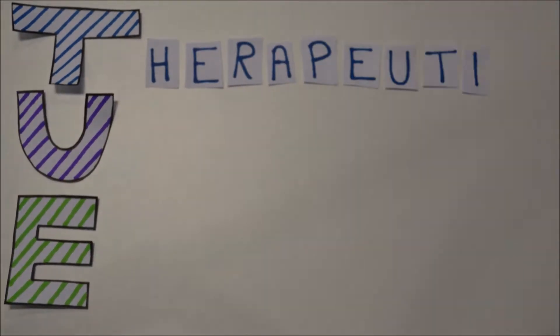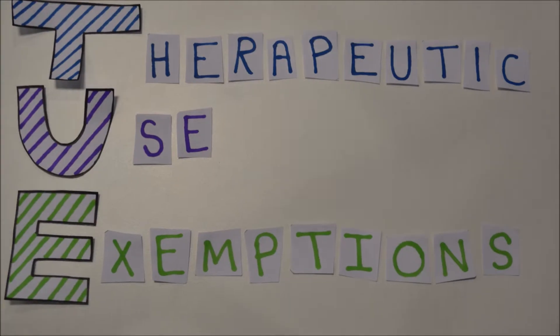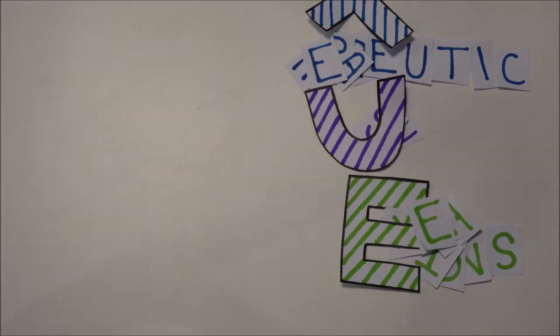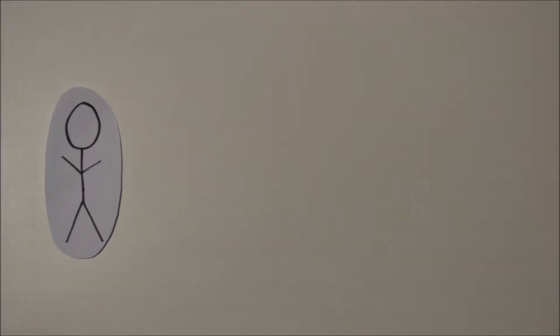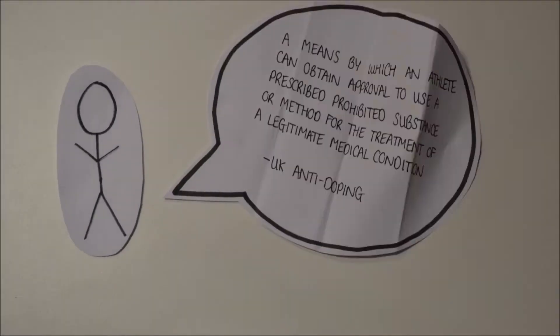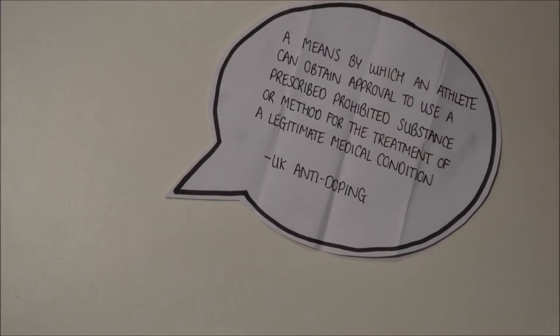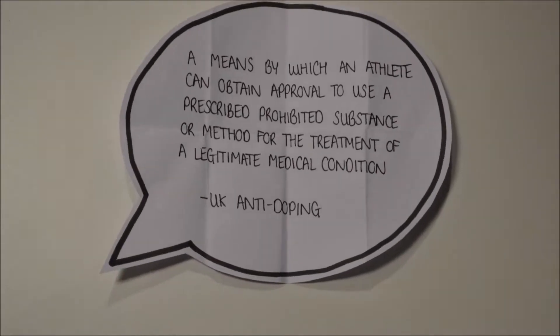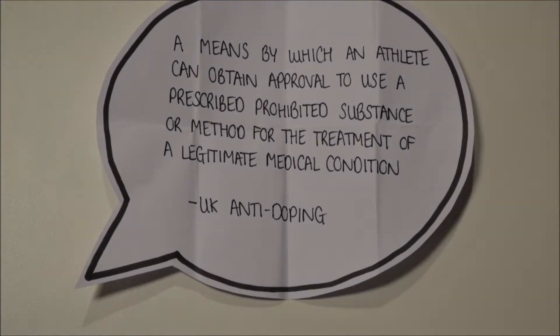TUEs, known as therapeutic use exemptions, are commonly used in a variety of sports. According to UK Anti-Doping, TUEs are a means by which an athlete can obtain approval to use a prescribed prohibited substance or method for the treatment of a legitimate medical condition.